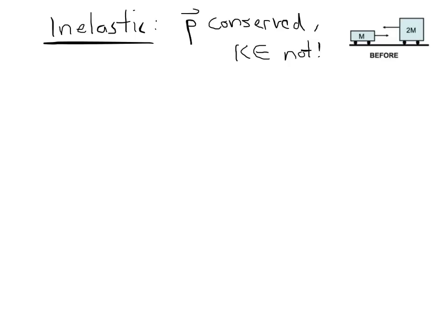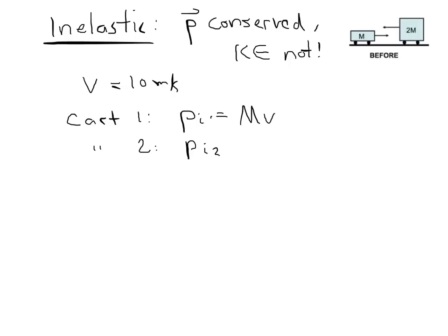For the inelastic collision, recall that momentum is conserved but kinetic energy is not. We define V = 10 m/s as the initial speed of each cart. Cart 1 (the left cart) has an initial momentum of mV. Cart 2 has an initial momentum of 2m times (−V), so −2mV, because cart 1 is moving to the right and cart 2 is moving to the left, and this is all in one dimension.